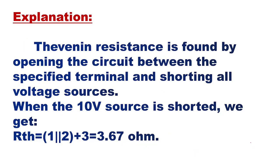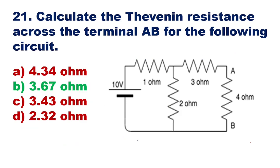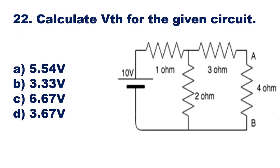Explanation: Thevenin's resistance is found by opening the circuit between the specified terminal and shorting all voltage sources. When the 10 volt source is shorted, we get RTH = 1 ohm parallel with 2 ohm, plus 3 ohm = 3.67 ohms. Option B, 3.67 ohm, is the correct answer.